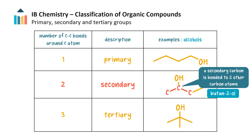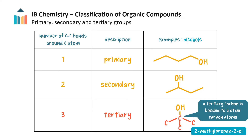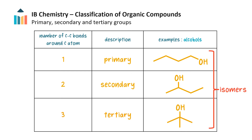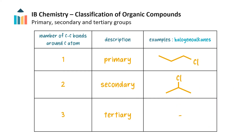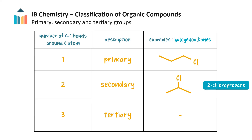Similarly, a secondary alcohol contains a hydroxyl group attached to a secondary carbon atom — a carbon atom bonded to two other carbon atoms. Butan-2-ol is a secondary alcohol. A hydroxyl group on a tertiary carbon, that is a carbon atom bonded to three other carbon atoms, gives a tertiary alcohol. 2-methylpropan-2-ol is a tertiary alcohol. These compounds are isomers since they have the same molecular formulas. The same descriptors can be used for haloalkanes: for example, 1-chloropropane is a primary chloroalkane, while 2-chloropropane is a secondary chloroalkane. These compounds are isomers.